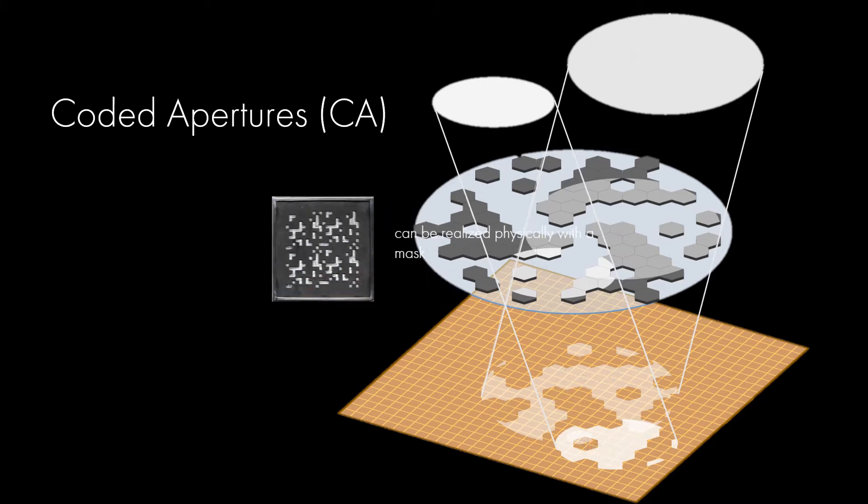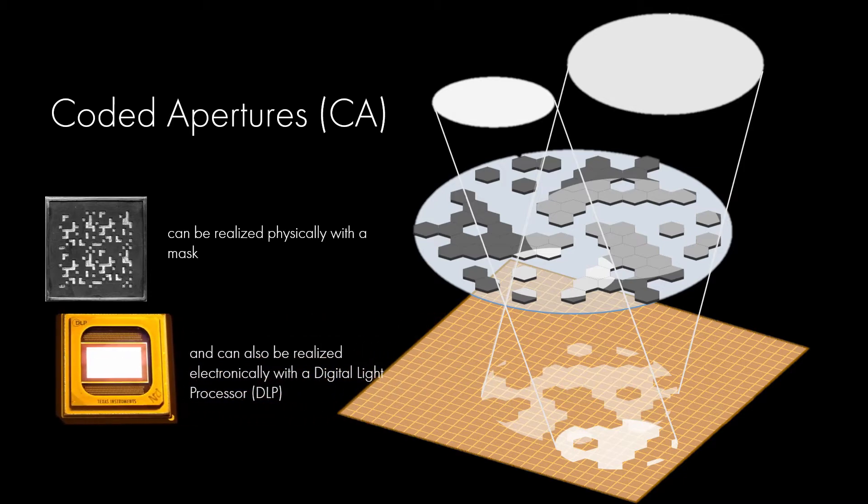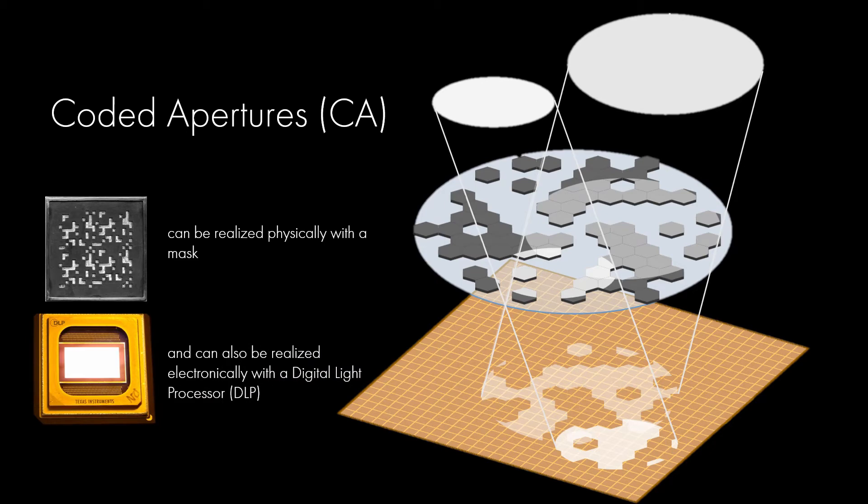Coded aperture masks can be realized physically by placing absorbing materials in the aperture plane. Those are fixed and cannot be easily changed. But they can also be realized electronically using a digital light processor, such as digital micromirrors or spatial light modulators. An advantage of those electronic DLPs is that the coded aperture pattern can be changed through time, even within the course of a single exposure. This is what we will use in this work.